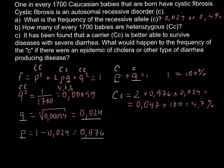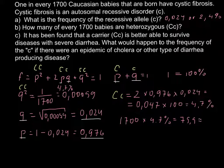The second question is how many of every 1700 babies are heterozygous? This is the last step in our calculation. We just multiply 1700 by 4.7%, and we get 79.9 people. We cannot use this for our answer, so we round it to 80. The answer for question B is 80 people would be carriers of this disease.